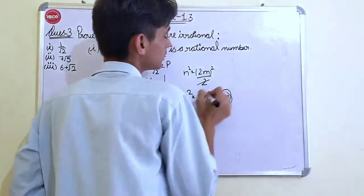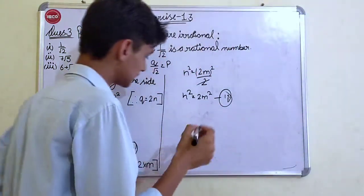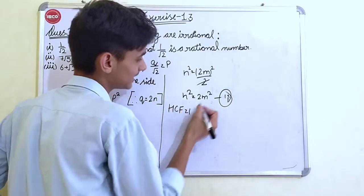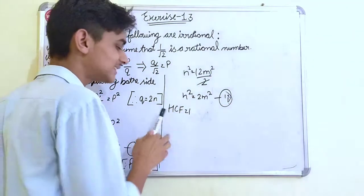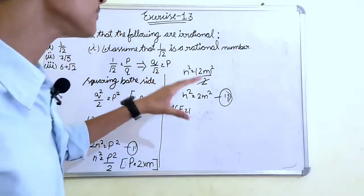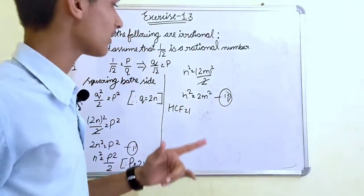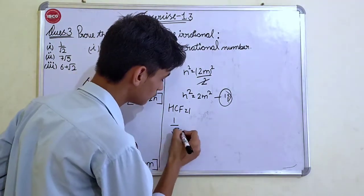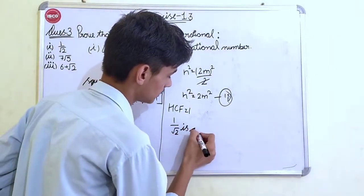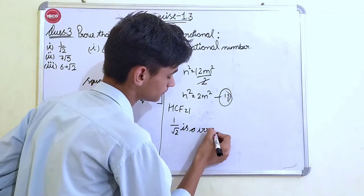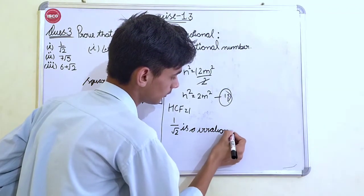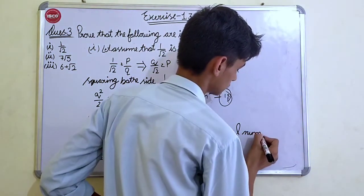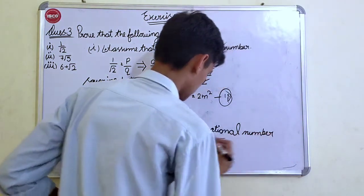It's the second equation. From one and two we conclude that the HCF is 1 and our assumption got contradict. We are wrong that it is not a rational number. 1 by under root 2 is an irrational number. Hence proved.